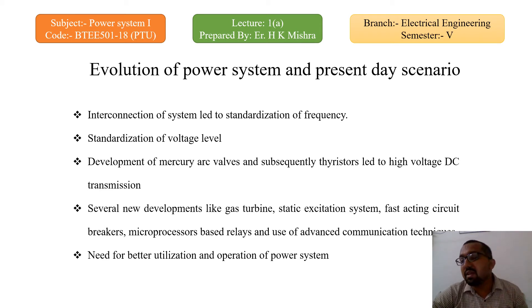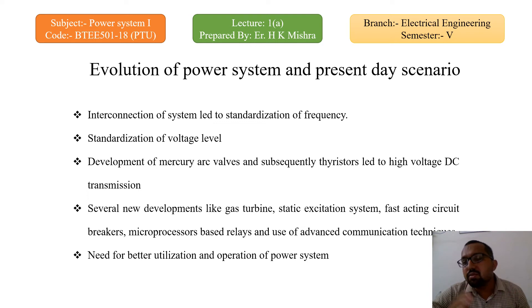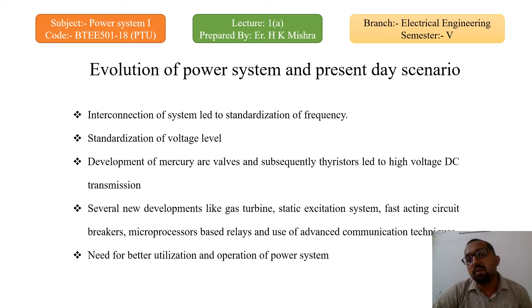Then there is the standardization of voltage levels. As demand keeps growing day by day, since we now use most of our appliances through electrical energy, we need standardization of voltage levels to transfer bulk power from one area to another over large distances of 500 to 2000 kilometers. We need to raise voltage levels to reduce the requirement for conductors carrying the power. After 220 kV, we have 400 kV, 765 kV, 1200 kV AC, 1000 kV DC systems, and 800 kV DC systems.